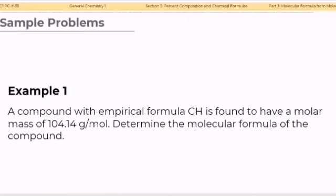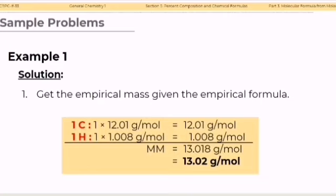Let's have example number 1. A compound with empirical formula CH is found to have a molar mass of 104.14 grams per mole. Determine the molecular formula of the compound. Step 1: Get the empirical mass given the empirical formula. The formula has 1 carbon and 1 hydrogen atom. Using molar masses of 12.01 grams per mole for carbon and 1.008 grams per mole for hydrogen, the empirical mass is equal to 13.018 grams per mole, or simply 13.02 grams per mole.